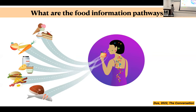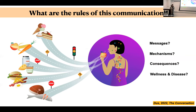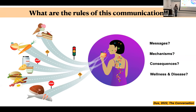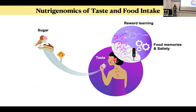One is to try to understand the food information pathways, and the second question is to try to understand the rules of this communication — that includes what the messages are, the mechanisms by which these messages are sent, perceived, and interpreted, what the consequences are for the physiology of the cells or tissue, and then whether any of these consequences contribute to wellness and disease.